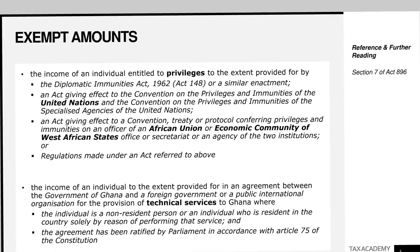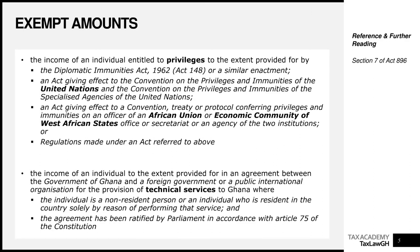The next is what I'll call the privileges paragraph. Persons who enjoy privileges under certain diplomatic immunities acts, under the UN and its specialized agencies, under the African Union, or ECOWAS and its agencies — any income these persons receive tied to those privileges will also be exempt from income tax. This is to encourage regional integration and cross-border collaboration. So if a UN agency person or someone entitled to a privilege under an AU or ECOWAS provision is in Ghana, we exempt them from income tax.